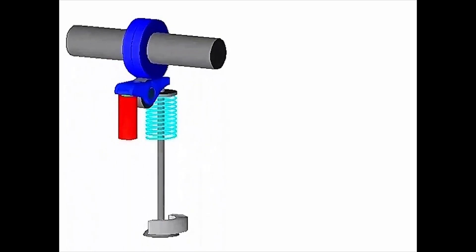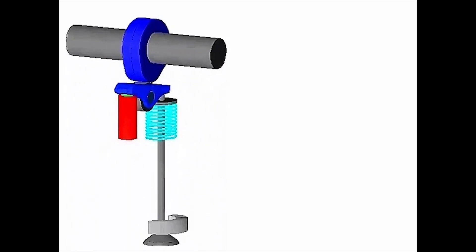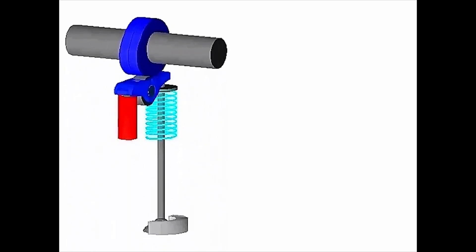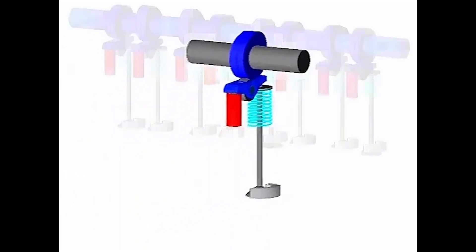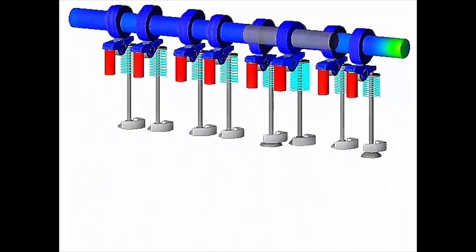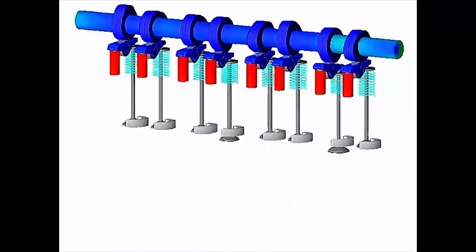The first version, Adams Engine, was released in 1998, and as the name implies it was just for internal combustion engine simulation, including crank train, valve train, timing drive, accessory drive, piston and rings, bearings and so on.